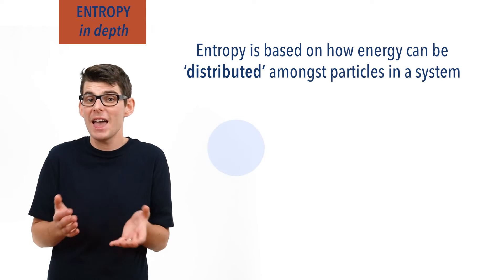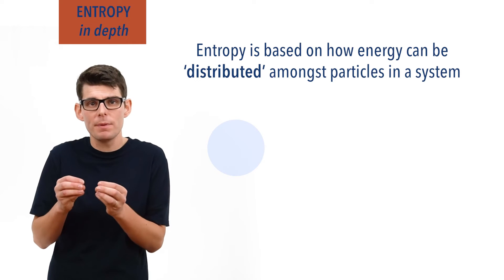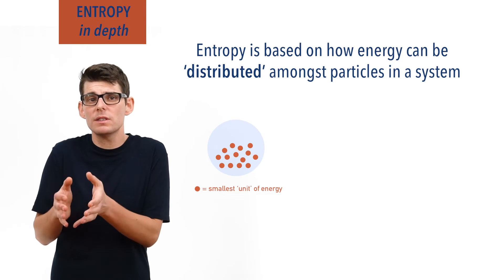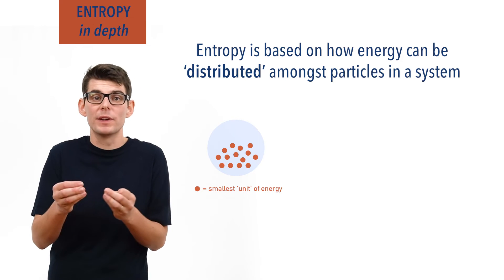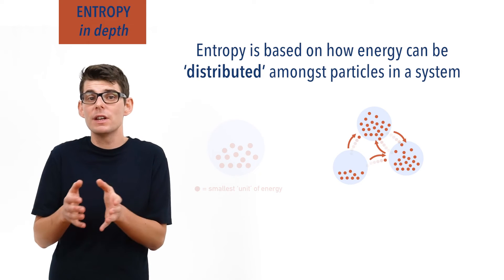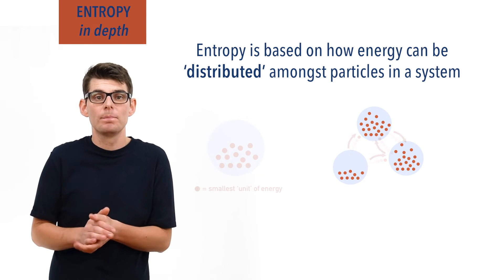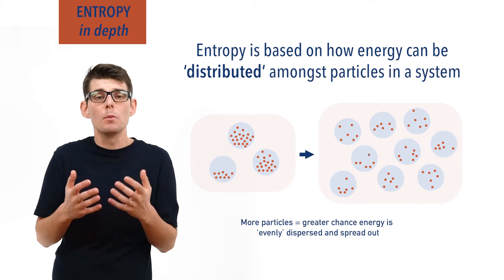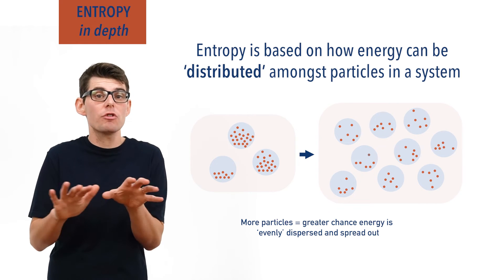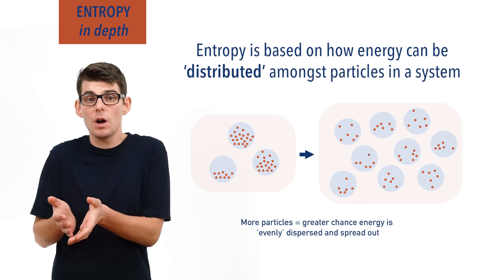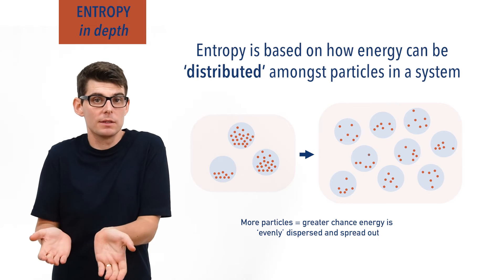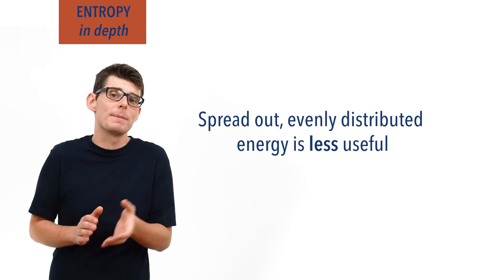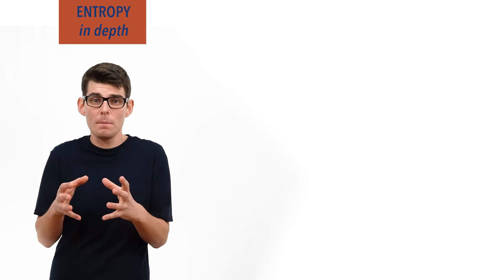Entropy is based on how energy can be shared or distributed amongst particles within a system. All particles have energy, made up of lots of small bits that can't be broken down into smaller amounts — almost like tiny units of energy. The particles in a system are constantly sharing these units of energy between them, meaning different particles can have different amounts of energy at any one time. The more possible ways there are of arranging that energy amongst the particles, the more likely it is that the energy will be evenly spread out or distributed amongst them all. This is why entropy is sometimes referred to as dispersal energy in a system.